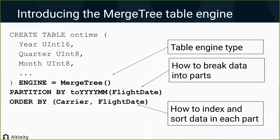The first step is to understand the basic table type, which is called MergeTree. The name is similar to a log-structured merge tree — a famous data structure introduced by O'Neill about 30 years ago. The basic idea is that MergeTree accepts data very quickly and puts it into storage, then in the background systematically merges it into a form that makes queries more efficient. When you insert data it's immediately queryable, but over time it merges into a much more efficient structure, minimizing the number of files to open and improving compression run length.